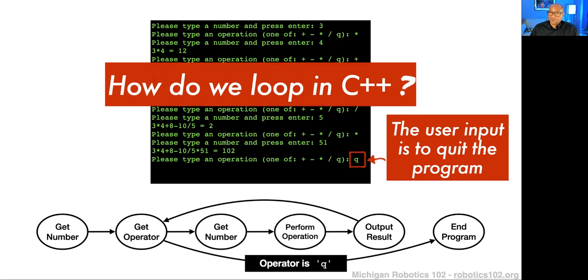We loop back again, do another calculation iteration — this time dividing by five, resulting in two. Then we take that two and multiply by 51 to get 102. At some point the user might say they want to quit and give a Q command. From the get-operator state, we can then go to an end-program state if the operator is Q.